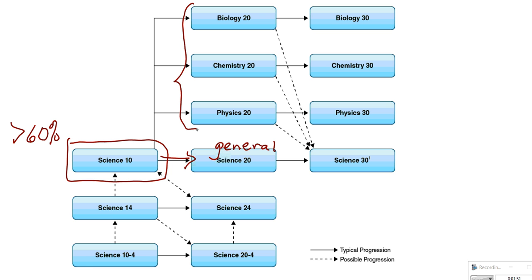Having successfully completed any of the sciences at the 20 level allows you to take Science 30.